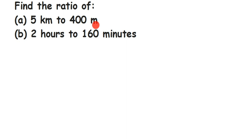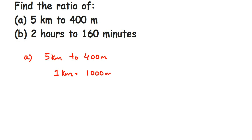Let's start the first question. We have five kilometers to 400 meters. We know that one kilometer is equal to 1000 meters, which means five kilometers will be equal to five times 1000, which is 5000 meters.